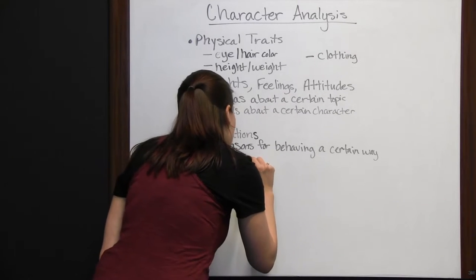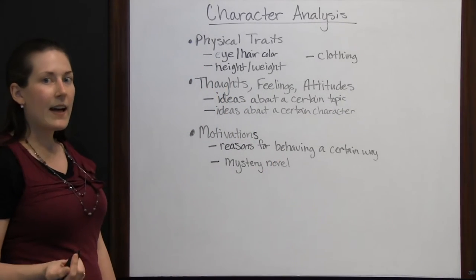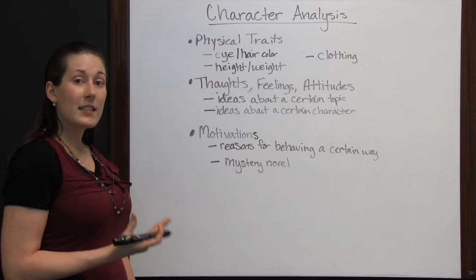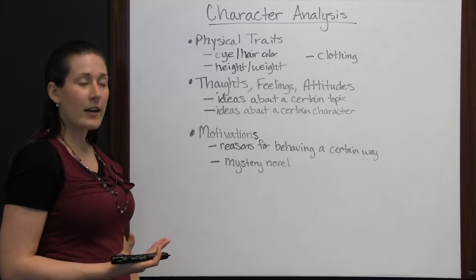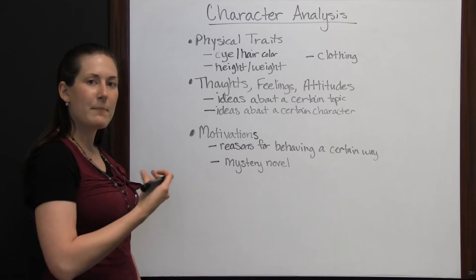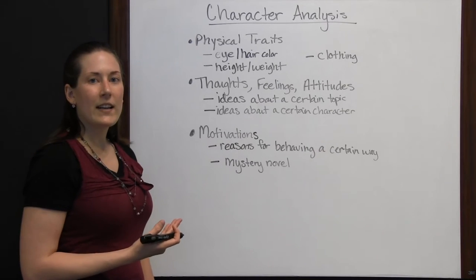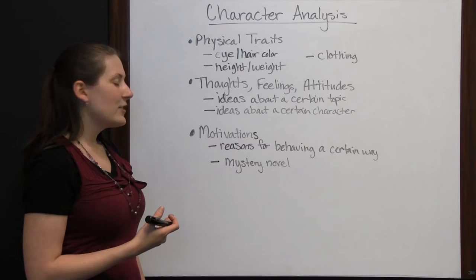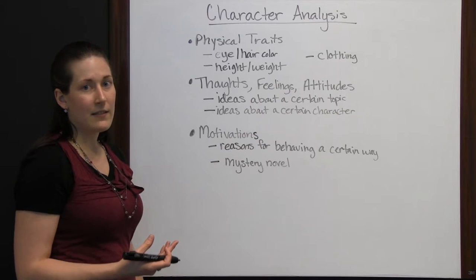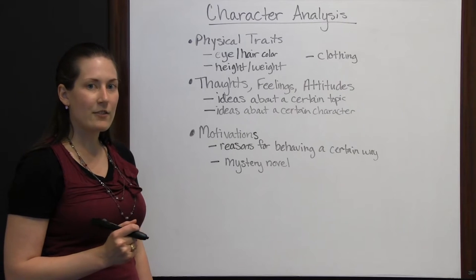An example we're going to look at is a mystery novel. Your main character in a mystery novel may be a detective. That detective may pretend to be a doctor to find out certain information from a suspect, because he wants to know if that suspect is guilty or not. Knowing the motivation for that main character to be deceitful — to lie about his profession — you know that he's doing that to find out the truth. He's not doing it just because he's a bad person. He's doing it because his job is a detective, and as a detective, he sometimes has to be a little sneaky to find out the answers he wants to know.